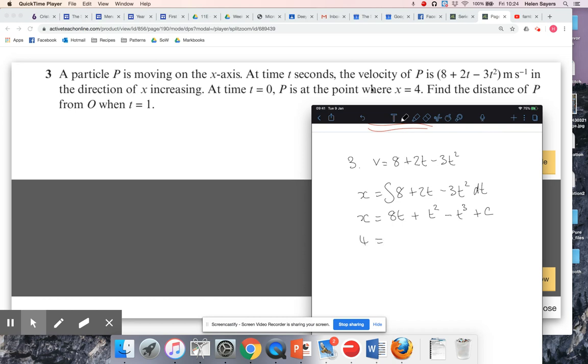So if I use that information, if T is zero, eight T is zero, T squared is zero, T cubed is zero, so C is four. So my full equation for distance is eight T plus T squared minus T cubed plus four.